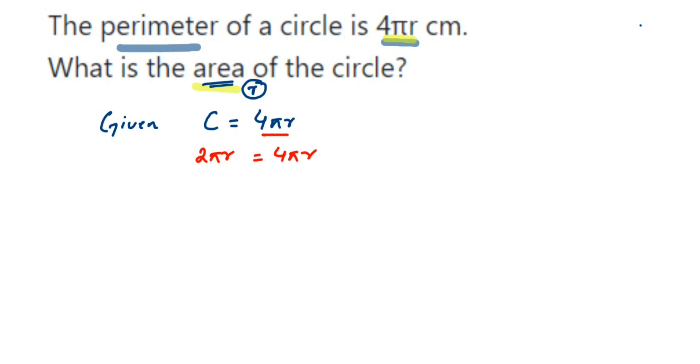So circumference is equal to, and here they have given this 4πr, so I want only r value here. Now how to compare? We're going to do comparison here. See, this 4 I can write it as 2 into 2, then into πr. Now let me just rearrange them, so this is equal to 2π and then again 2r.